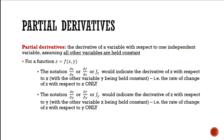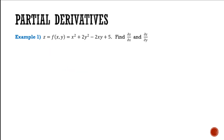Now let's do some examples to show how this is implemented. Example 1: z is equal to a function of x and y — it's x squared plus 2y squared minus 2xy plus 5. We're going to find di z by di x, the partial derivative with respect to x, and then di z by di y, the partial derivative with respect to y. For di z by di x, this means we're looking at how x is changing, assuming that our y's are constants — only x is changing, y is going to be treated like a constant.